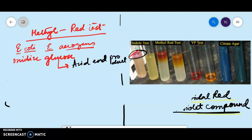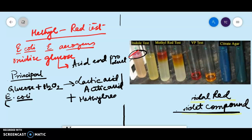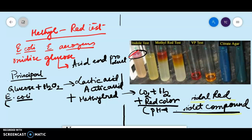Let's discuss the principle. For Escherichia coli: glucose plus water produces lactic acid and acetic acid. When you add methyl red, you also get CO₂ plus H₂ and a red color. So you will get a red color end product at pH 4. That is the principle behind your Methyl Red test for E. coli.